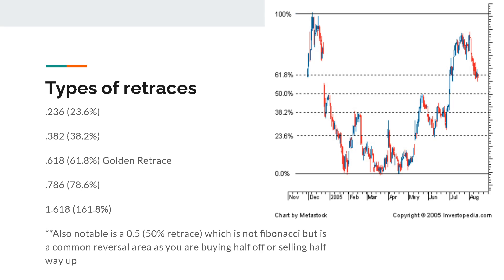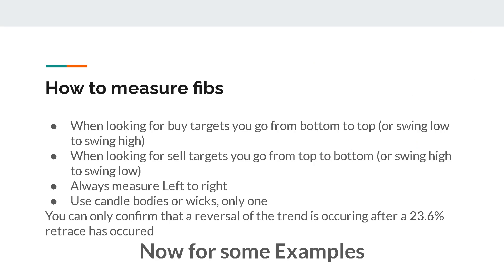Also notable is a 50% retrace, which is not technically under Fibonacci, but it's a common reversal area — you can note where half off of a buy will be, or selling halfway up to a full retrace. When looking for buy targets, you go from the bottom to the top, or what's known as the swing low to the swing high of a trade. When looking for sell targets, you go from the top to the bottom, or swing high to swing low. Always measure from left to right. You can only use bodies or wicks when charting your Fibonacci — you have to choose one for both ends. You can only confirm that a reversal of the trend is occurring after that 23.6% retrace has occurred.